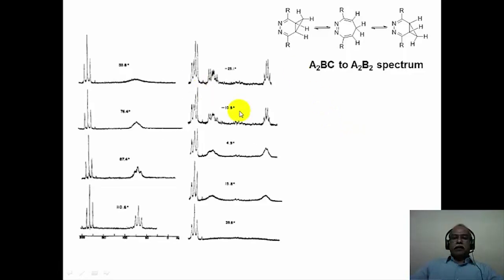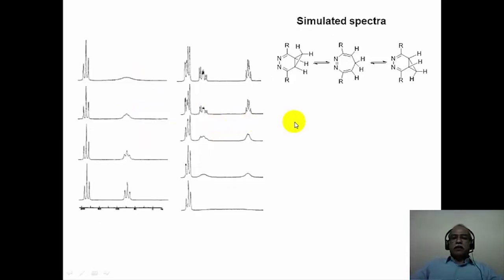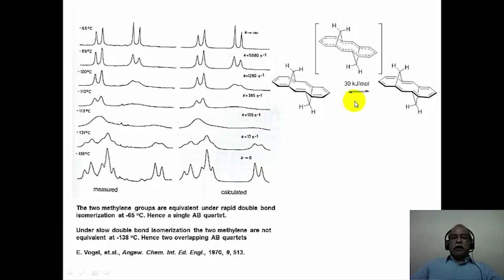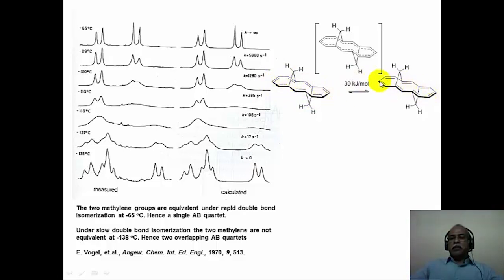The NMR spectra of this example can be simulated, and the simulated and experimental spectra look nearly the same under various temperature conditions. Another interesting example is the isomerization of the double bond in a dimethano-bridged annulene system. The two methylene groups are equal and rapid double bond migration is taking place at minus 65 degrees, and hence a single AB quartet is seen for the two methylene functional groups. When the molecule undergoes rapid interconversion, this is essentially double bond isomerization occurring very rapidly even at minus 65 degrees.